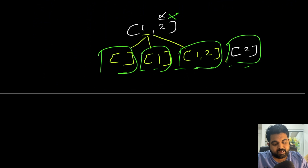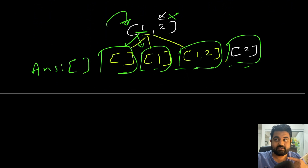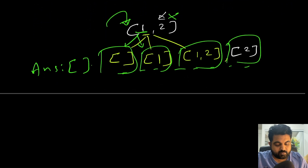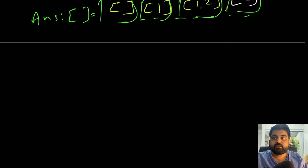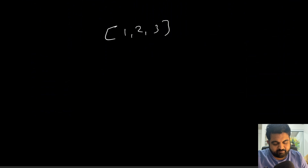At every given step we check whether including or not including that value results in some subset, then record that subset in our answer list. This answer list is a list of lists, because it contains multiple array values, storing the result of every single subset we calculate. At every single step we make a decision to include or exclude an element, and every answer generated is one of the subsets.